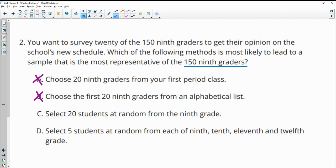Select twenty students at random from the ninth grade. Well, students at random from the ninth grade, it's going to be representative. And then select five students at random from ninth, tenth, eleventh, and twelfth. Well, that's not going to represent ninth grade since we've got tenth, eleventh, and twelfth graders in there. So C would be the correct option there.